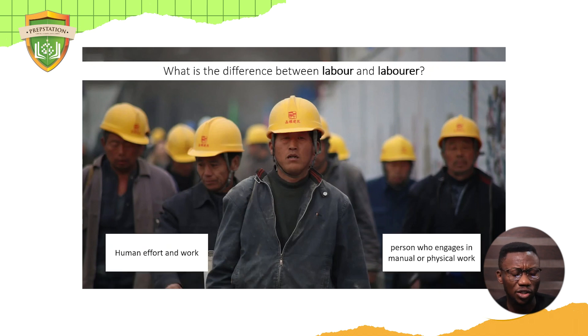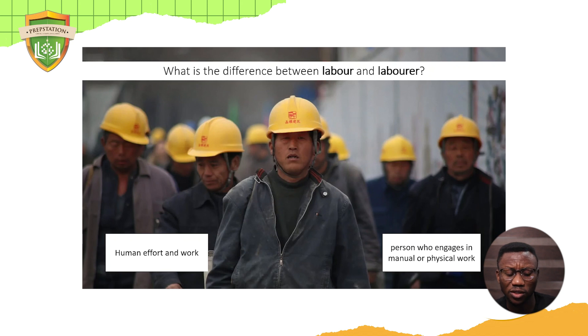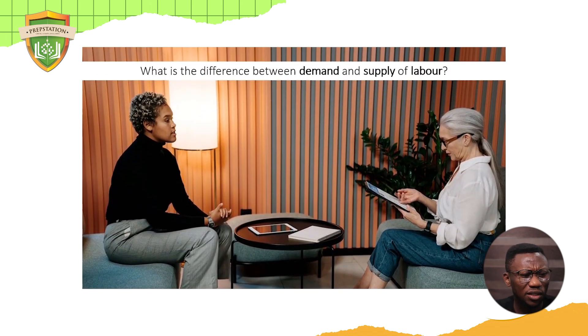Labor is human efforts at work, and a laborer is a person who is engaged in physical work. The difference between demand and supply of labor brings about what we call the labor market. We've learned about demand and supply before — the market determines demand and supply. But in this case, we're talking about demand and supply of labor, not for goods and services.